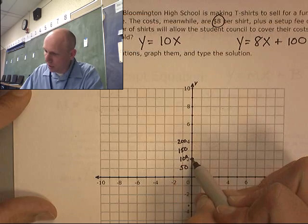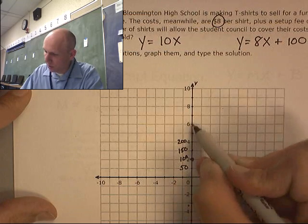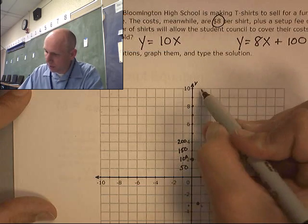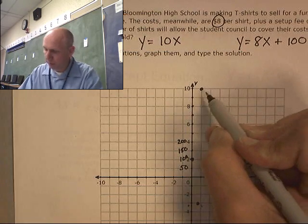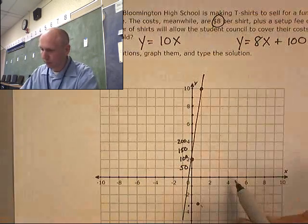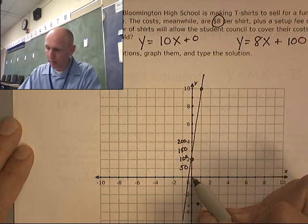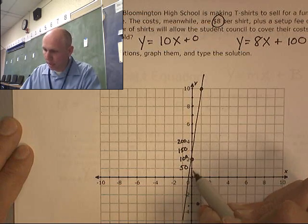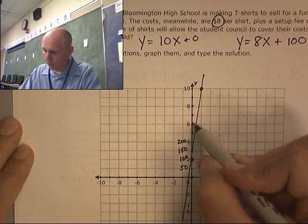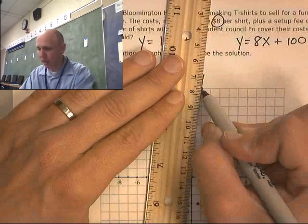So, I'm going to start at 100. I'm going to go up 8 over 1. And the other one, I start at 0. And I go up 10 over 1. So, there's the point where they come together.